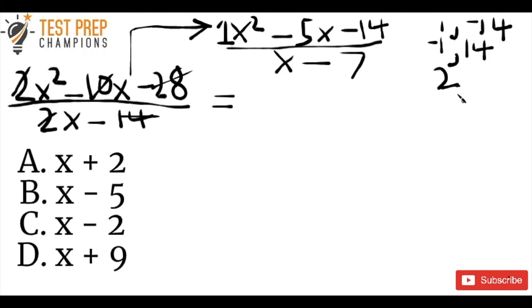So what about 2 and negative 7? Well, 2 times negative 7 gives us negative 14. And 2 plus negative 7 is negative 5. So this is actually going to work here. So we've got this 2 and we've got negative 7.